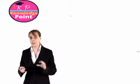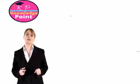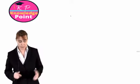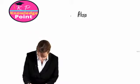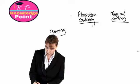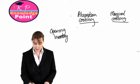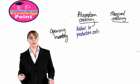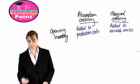Before we get into our exercise, we're going to note down what we need to do with our opening and closing inventory in our profit calculations — both absorption costing and marginal costing. In an absorption costing system, the value of our opening inventory is added to our production costs. In a marginal costing system, it is added to our variable costs.